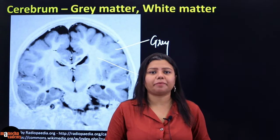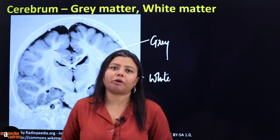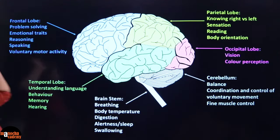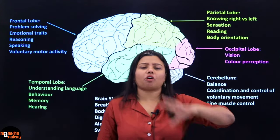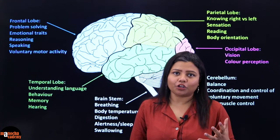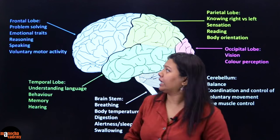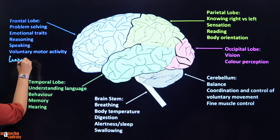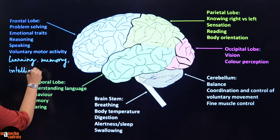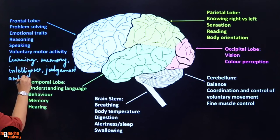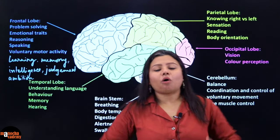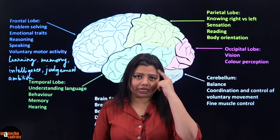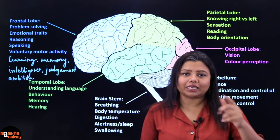Now let us quickly understand the functions of the different lobes of the cerebrum. The frontal lobe is the center for all kinds of higher-order activities of your brain, like problem solving, emotional traits, reasoning, speaking, voluntary and motor activities. It is also the center for learning, memory, intelligence, judgment, ambition — basically IQ. All the kinds of higher-order thinking that you do is this part. That is why when we think, we do something like this, as if trying to poke the frontal lobe.